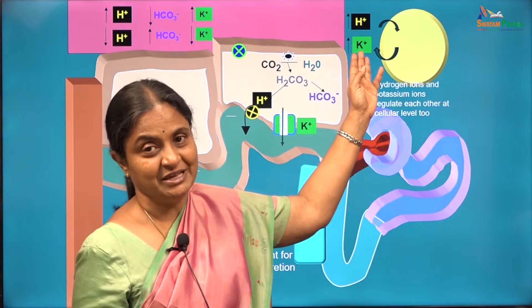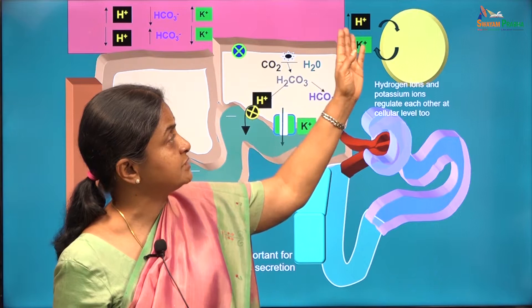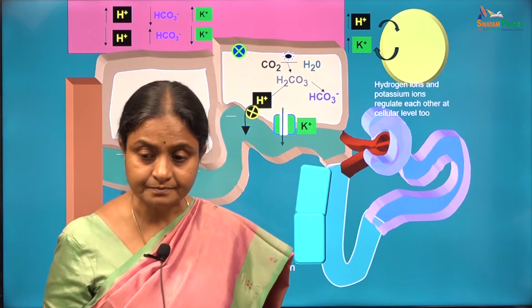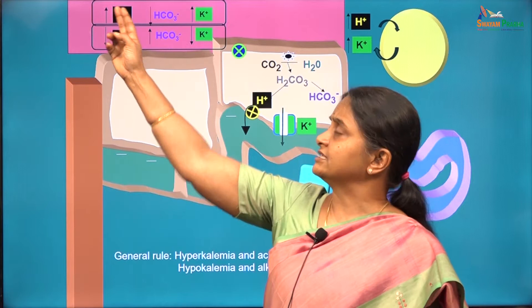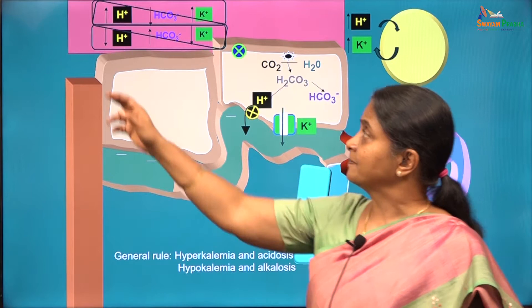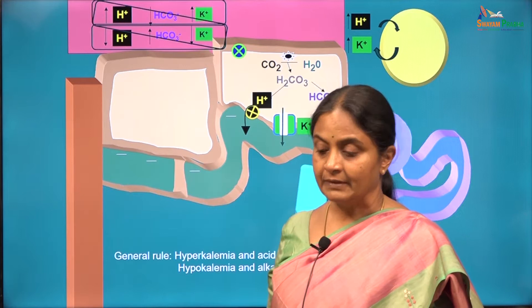The reverse occurs in alkalosis — when there are fewer hydrogen ions in plasma, hydrogen ions will translocate out of the cells, resulting in potassium uptake by the cells and potassium levels in plasma will drop. Generally therefore, hyperkalemia and acidosis coexist, and hypokalemia and alkalosis coexist — except in one condition where you would find acidosis coexisting with hypokalemia.